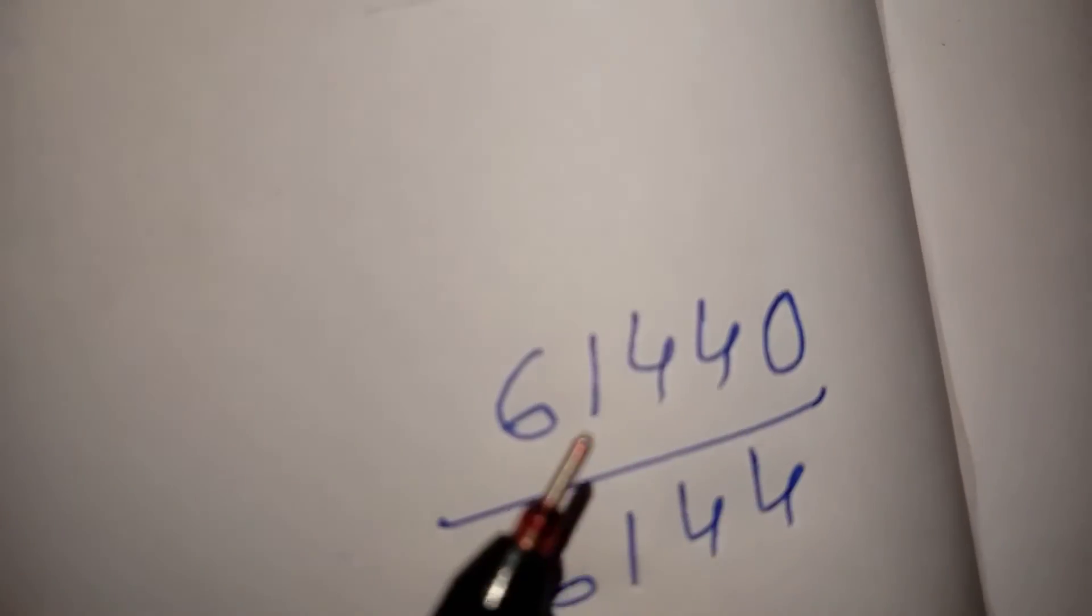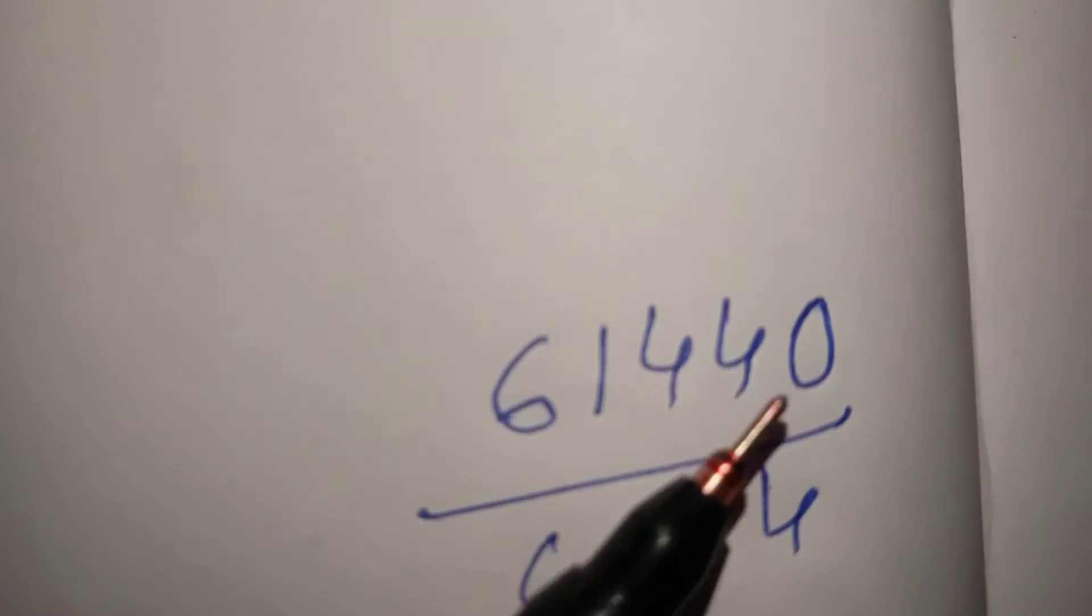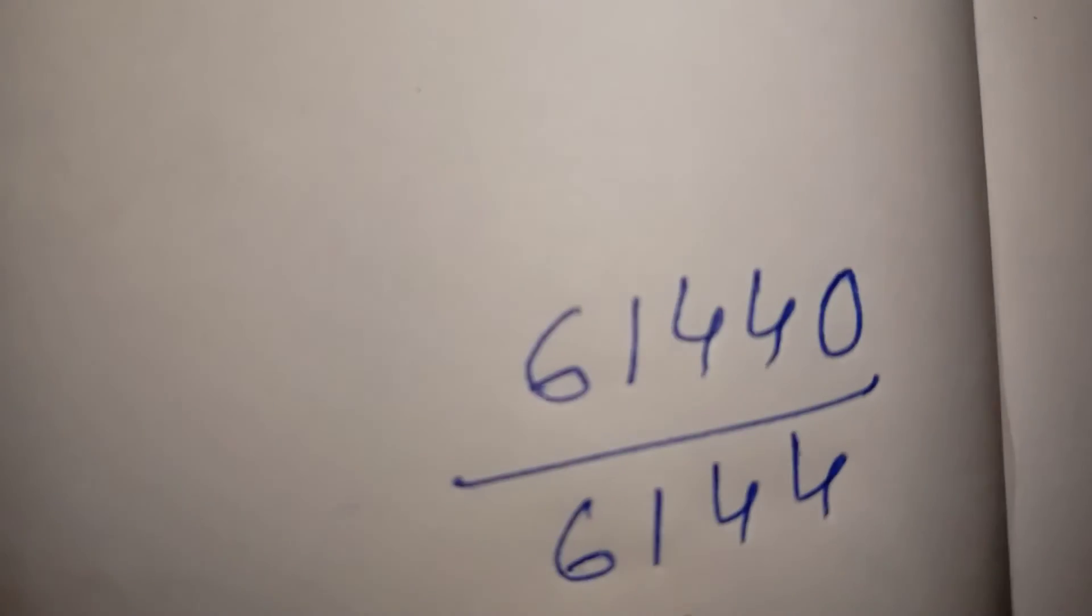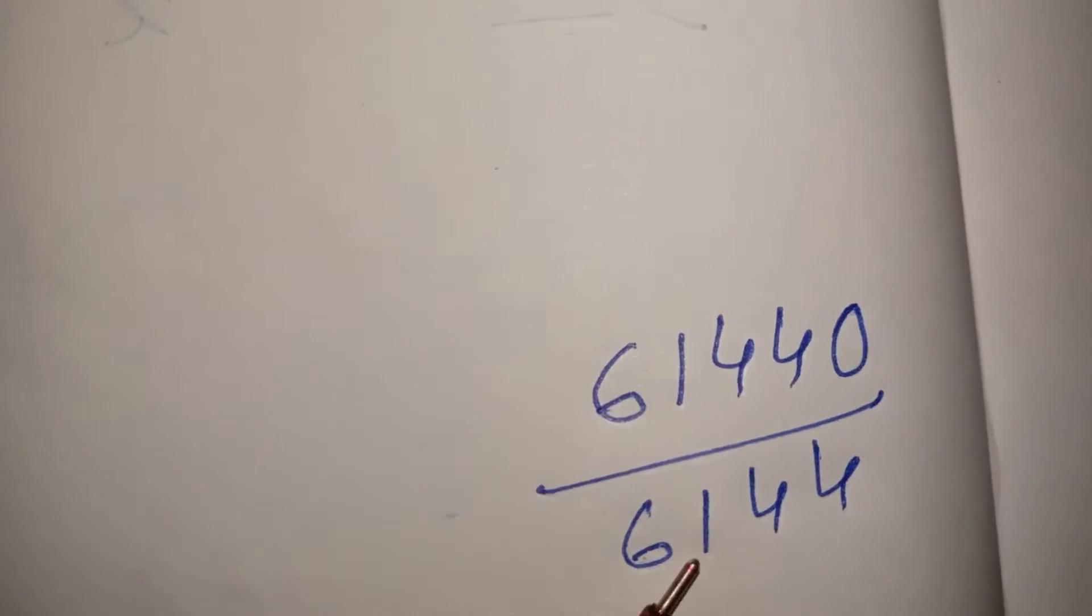When we divide 6144 by 6144, we simplify the expression to get our answer.